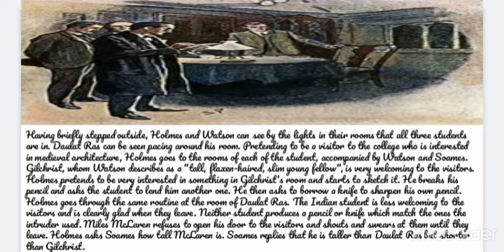Having briefly stepped outside, Holmes and Watson can see by the lights in their rooms that all three students are in. Mr. Raz can be seen pacing around his room. Pretending to be visitors to the college interested in medieval architecture, Holmes goes to the room of each of the students accompanied by Watson and Soames. Gilchrist, whom Watson describes as a tall, flaxen-haired, slim young fellow, is very welcoming to the visitors. Holmes pretends to be very interested in something in Gilchrist's room and starts to sketch it. He breaks his pencil and asks the student to lend him another one, then asks to borrow a knife to sharpen his own pencil. Holmes goes through the same routine at the room of Dolat Ras. The Indian student is less welcoming and is clearly glad when they leave. Neither student produces a pencil or knife which match the ones the intruder used.